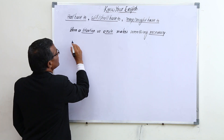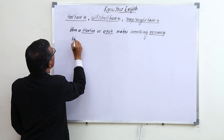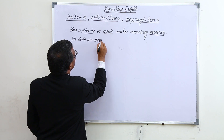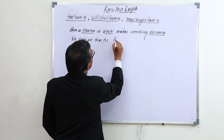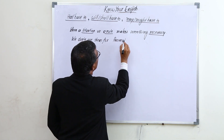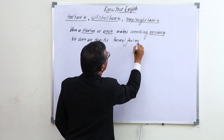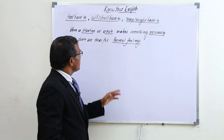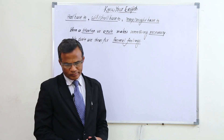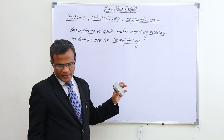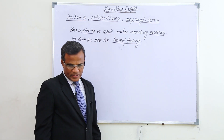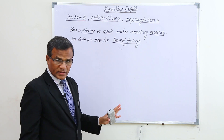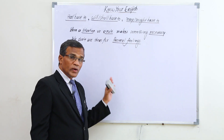We do not use these structures for personal feelings. For personal feelings of necessity, we use 'must.' But when a situation or rule makes something necessary, we use 'has to / have to / will have to / shall have to / may have to / might have to.'